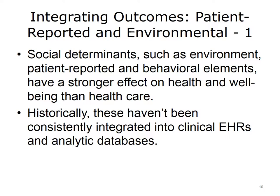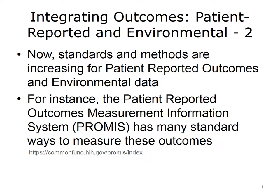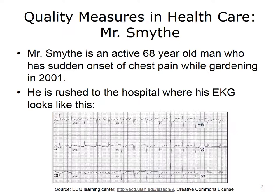Similarly, the outcomes patients perceive — such as the amount of pain they feel or the things they can do — are more important than many lab tests or other study results. There are a number of new standards and methods to record and integrate information about patient outcomes and environmental data. For instance, patient-reported outcomes are stored and can be retrieved from a measurement information system known as PROMIS. This system provides structured, validated ways for patients to report on outcomes that may be important to them, such as their depression symptoms or their overall function for daily activities.